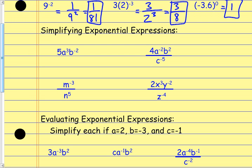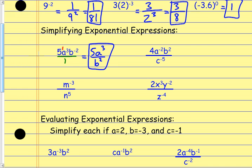For this first one, consider what the exponents for these other things are. This is like 5 to the first power, a to the positive third power, and b to the negative second. Only the thing with the negative exponent gets sent to the denominator. The 5 stays where it is because it has a positive exponent. The a to the third stays where it is. Only the b to the second goes to the denominator, because we consider these technically as being in the numerator to start since the whole thing is over 1.